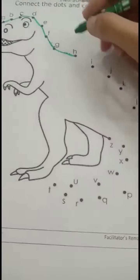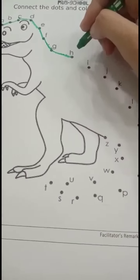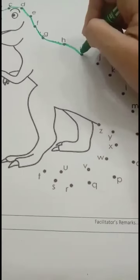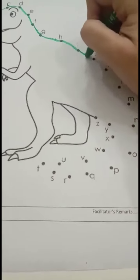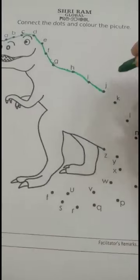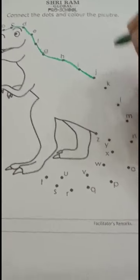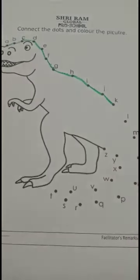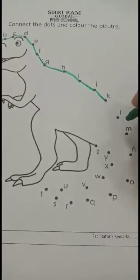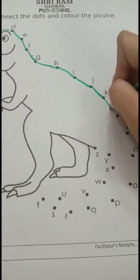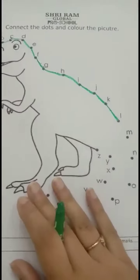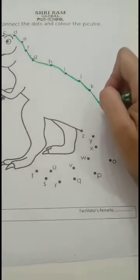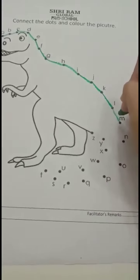H. Now which letter will come after H? I. So let's move forward. Very good — I. Which letter will come after I? J. Very good. Now which letter will come after J? K. Very nice. Let's move forward and connect the dot till K. Now which letter will come after K? L. Very good. So let's move forward and connect the dot, L. Now which letter will come after L? M. Very good. Now let's move forward and connect to M.